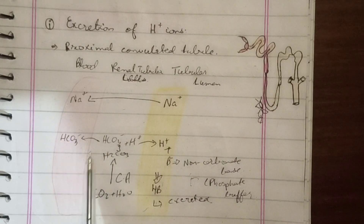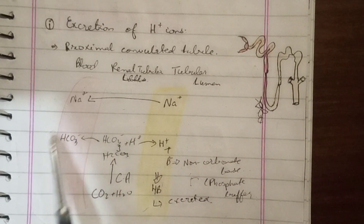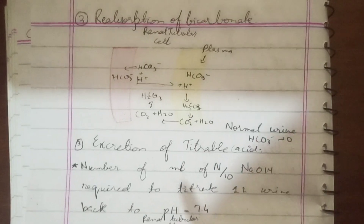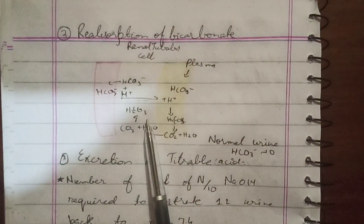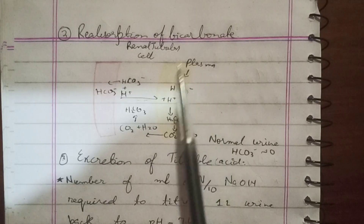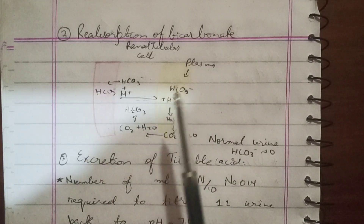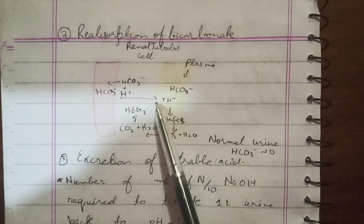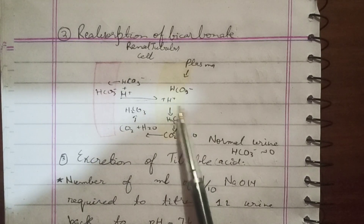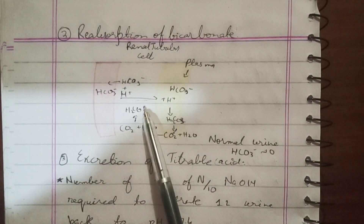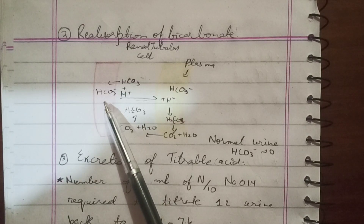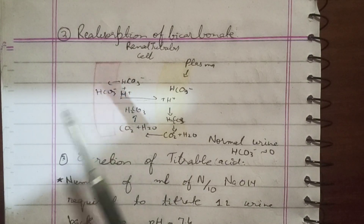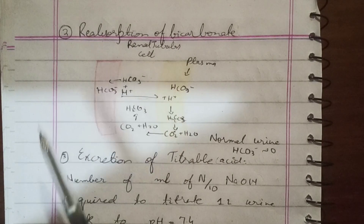In this way, the renal mechanisms accomplish excretion of hydrogen ions. We can see that the bicarbonate ions are conserved. The bicarbonate ions formed in the tubular cells move into the blood — HCO3⁻ goes back to the blood. This is the mechanism of reabsorption of bicarbonate ions.